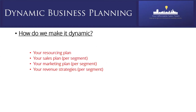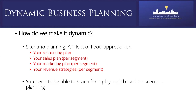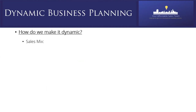How do we make it dynamic? Remember those four red elements: the resourcing plan, sales plan, marketing plan, and revenue strategies. It's a fleet-of-foot approach and it's about having a playbook and scenario planning. Back in May 2020, Black Sheep Restaurant in Hong Kong produced a COVID-19 playbook that went viral. If you don't have a copy it's available online. Many businesses used it for their own planning — an 'if this happens, then I will do this' approach is extremely useful for this year and next.